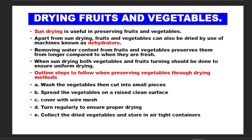We are supposed to dry fruits and vegetables. We normally use sun drying, which is useful in preserving fruits and vegetables. Apart from sun drying, fruits and vegetables can also be dried using a machine known as a dehydrator. Removing the water content from the fruits and vegetables preserves them for longer.